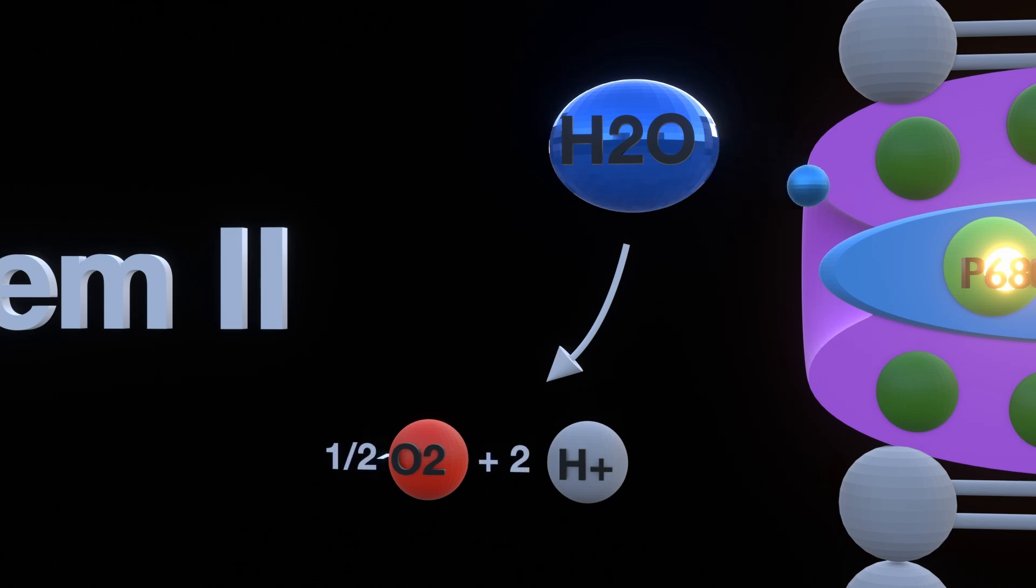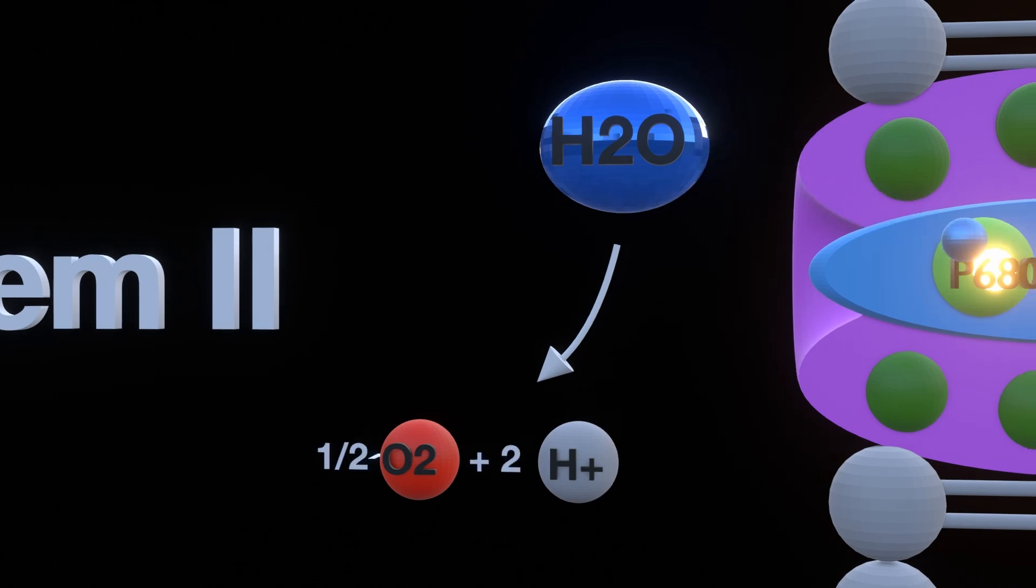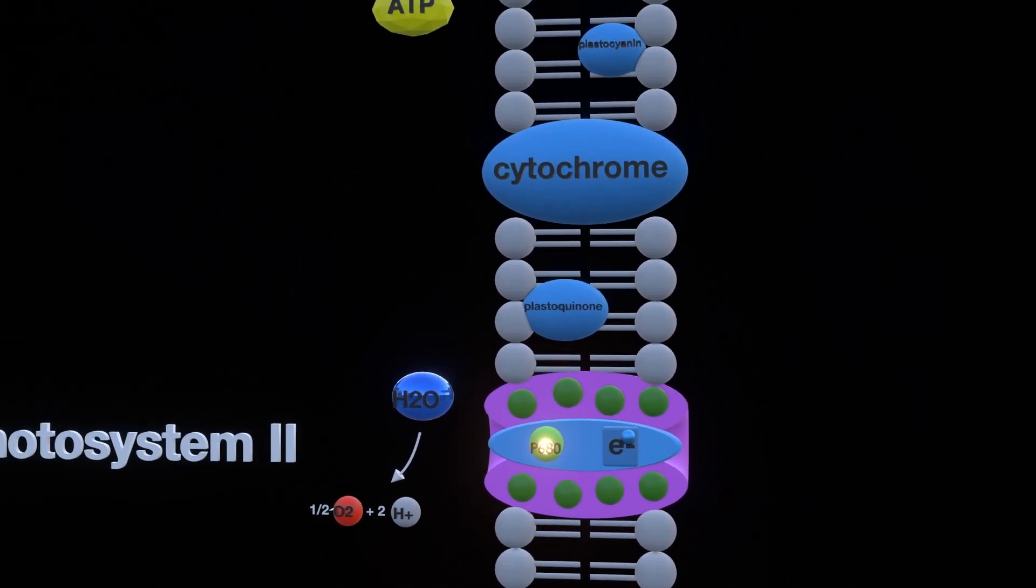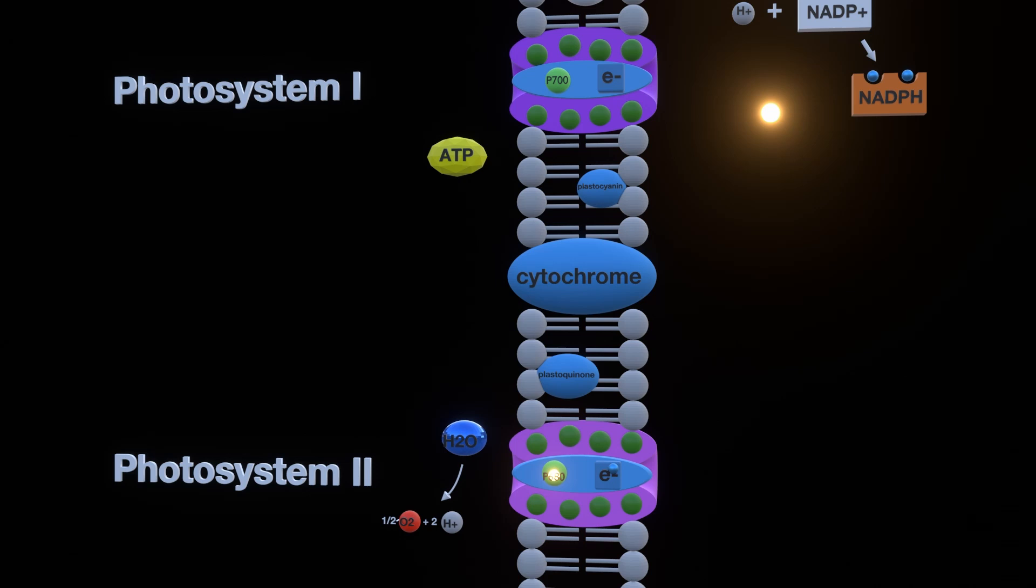The one electron moves to p680 where it is now together with the photon. The photon excites the electron and it moves up in energy states to the electron acceptor, also called reaction center, on the left there. After it has moved up in energy states it then moves down the electron transportation chain through these proteins to photosystem 1.